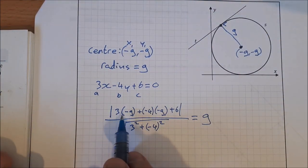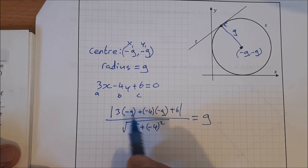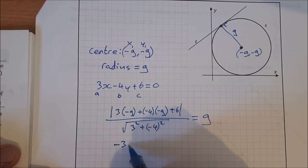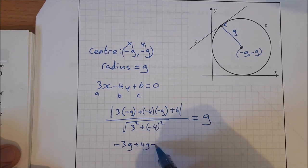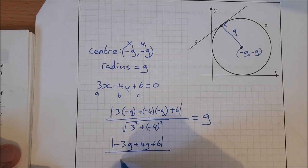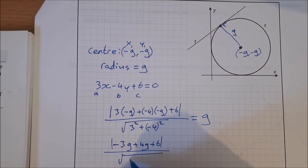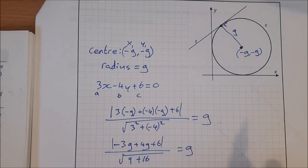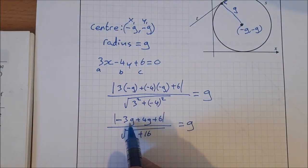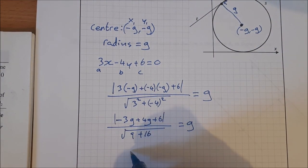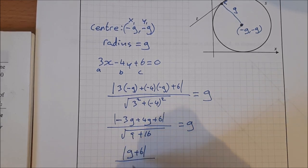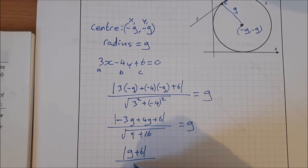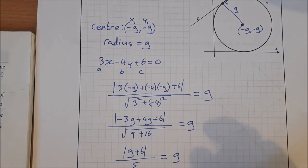Simplifying: 3(−g) = −3g, −4(−g) = +4g, so the numerator becomes |−3g + 4g + 6| = |g + 6|. The denominator is √(9 + 16) = √25 = 5. So |g + 6| / 5 = g.